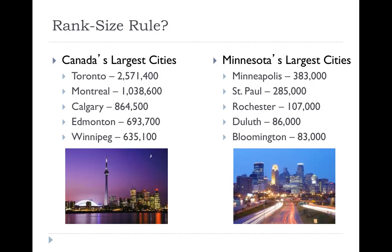Minnesota's largest cities — Minneapolis at 383,000 and St. Paul at 285,000 — don't follow a strict rank size rule or a primate city model individually. However, if you combine Minneapolis and St. Paul into the Twin Cities at over 500,000, then compare to Rochester next, you do see something closer to a primate city pattern. Canada, while not a perfect rank size rule, is definitely not a primate city either.